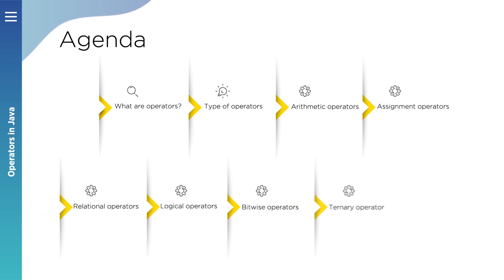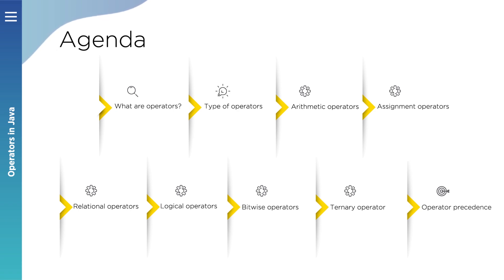Operators in Java can be categorized based on two criteria. The first criteria is number of operands. There are three types: an operator is called unary, binary, or ternary based on number of operands. If an operator takes one operand it is called a unary operator, two operands a binary operator, and three operands a ternary operator.